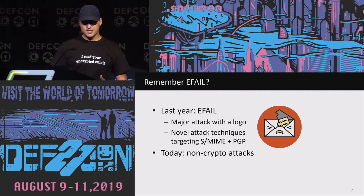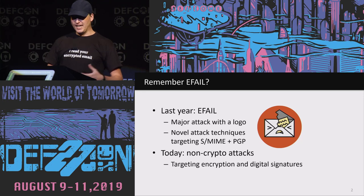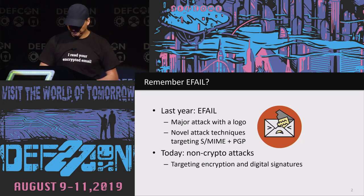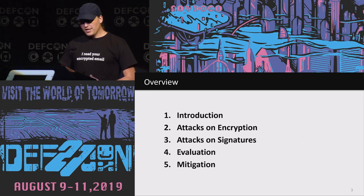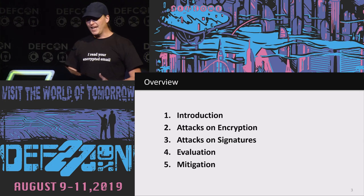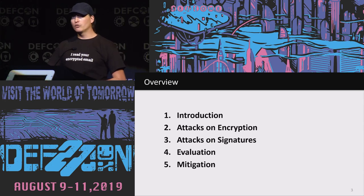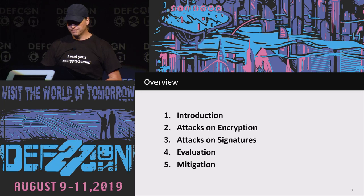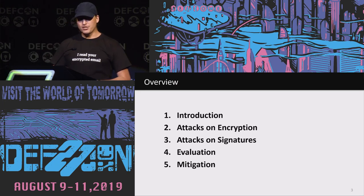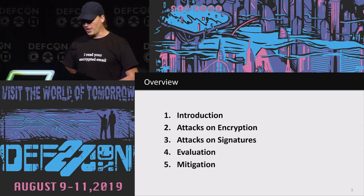We are not going to do any crypto, but super practical and super simple attacks against encryption and digital signatures in the context of email. Here's an outline of the talk: first, a short introduction on email, PGP, and S/MIME; then the attacks on encryption and digital signatures and an evaluation on 24 widely used email clients; and finally some countermeasures so developers can protect their customers from those attacks.